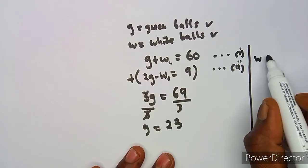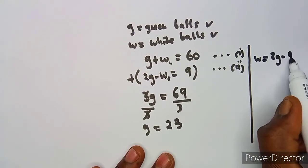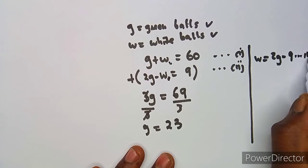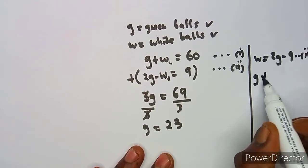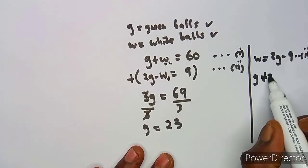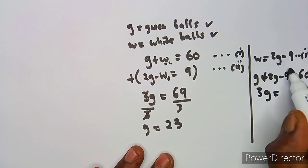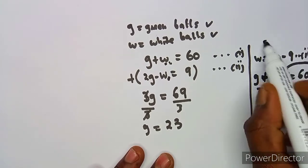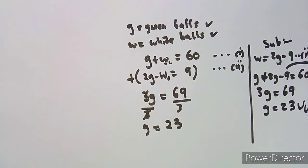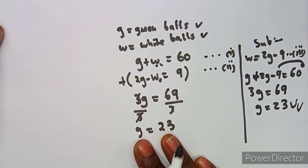Alternatively, using substitution: from equation 2, make w the subject — w = 2g − 9 — then substitute into the first equation. You get g + (2g − 9) = 60, so 3g = 69, giving g = 23. Both methods yield the same result.